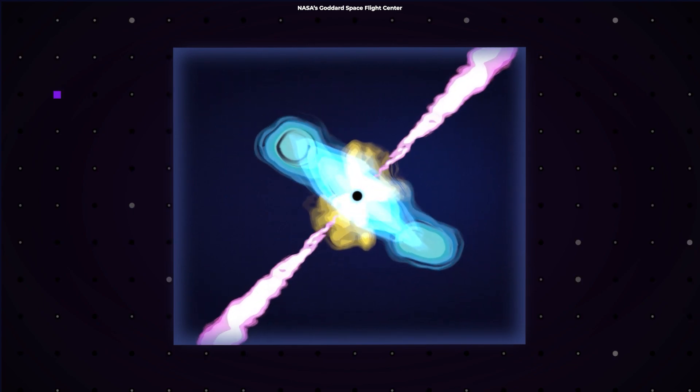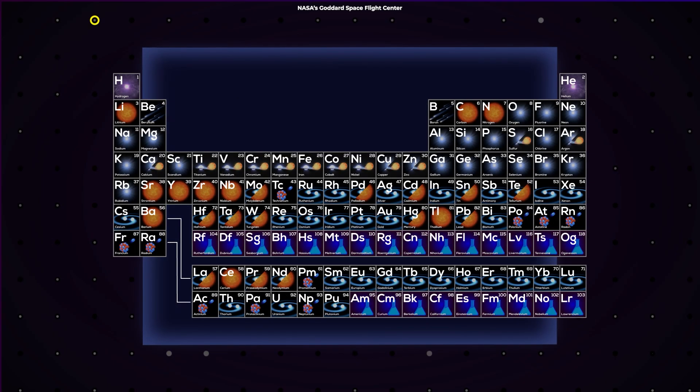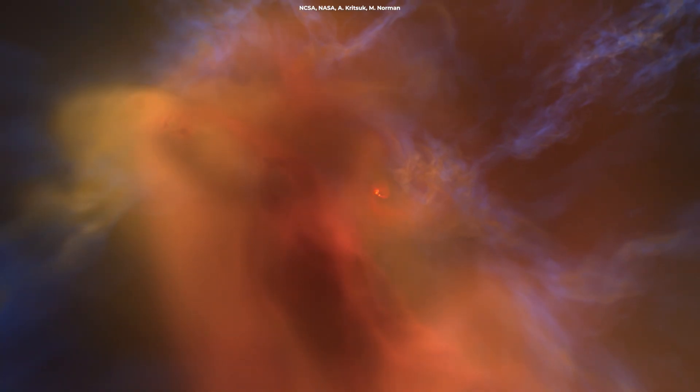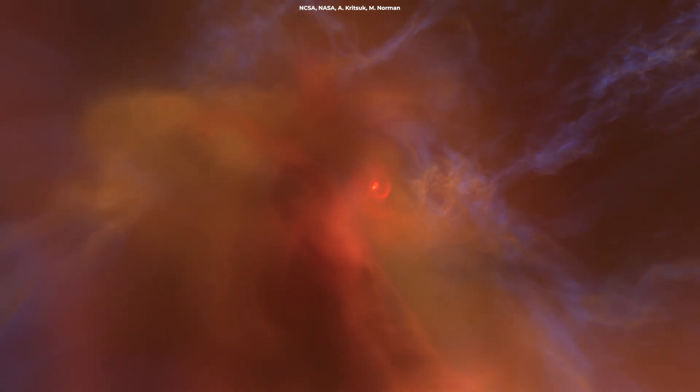Kilonovae are cosmic factories that create heavy metals including gold, platinum, iodine, and uranium. Because they enrich the chemical composition of the universe, kilonovae are critical to providing the basic ingredients for the formation of planets and life.